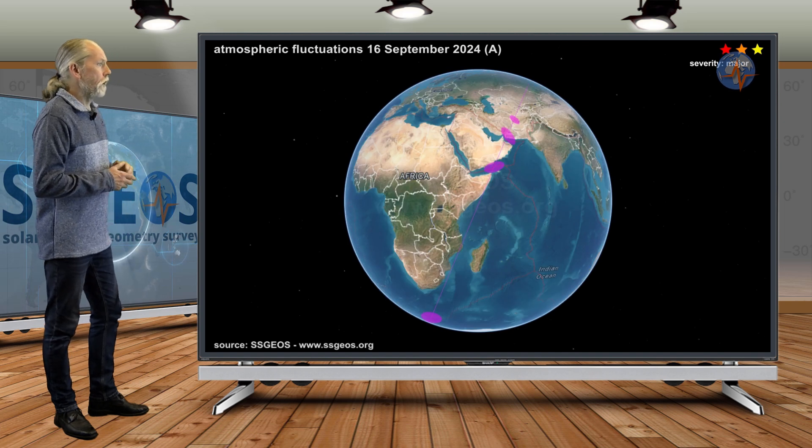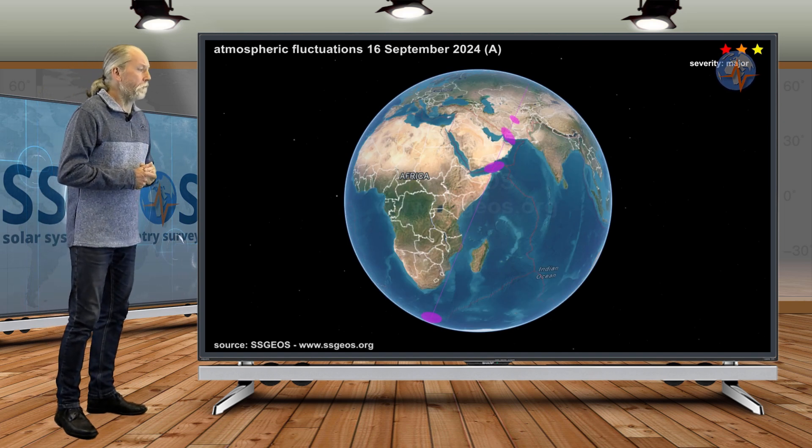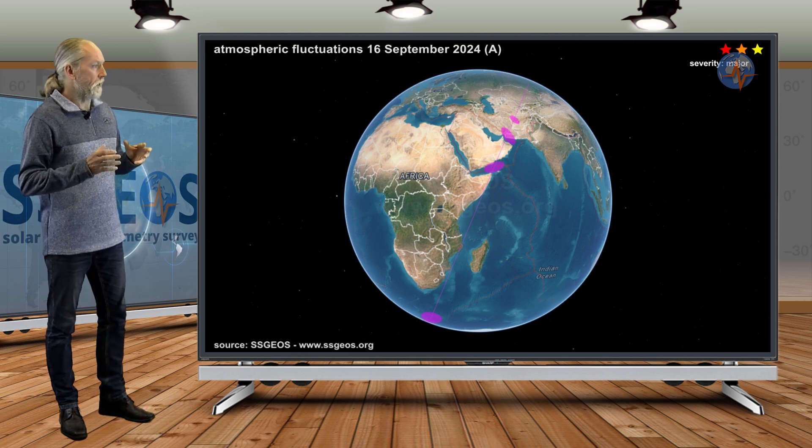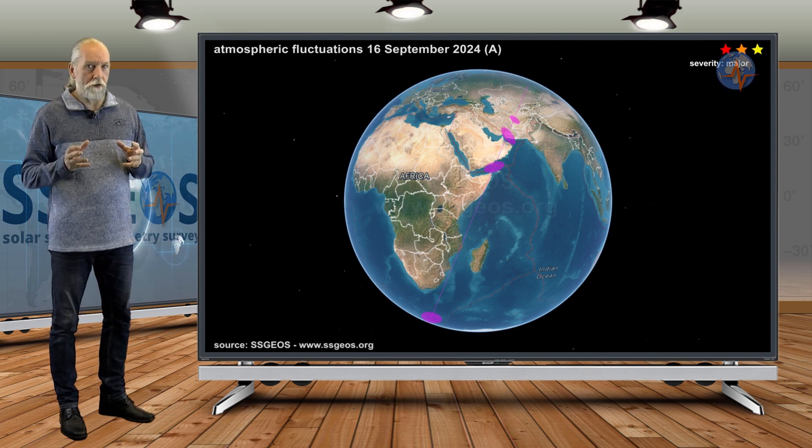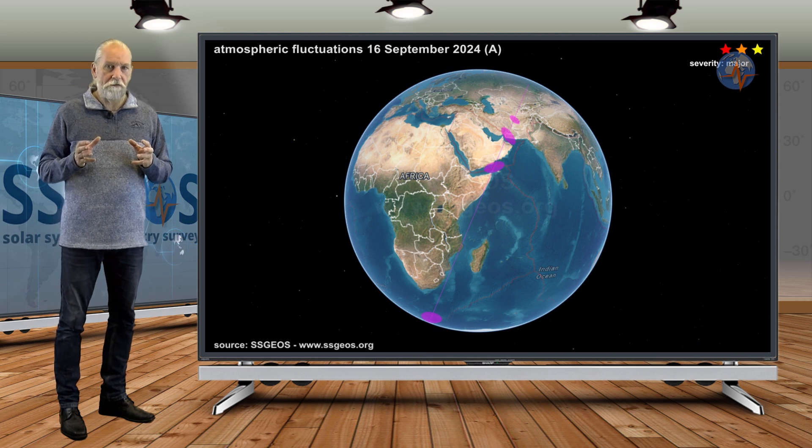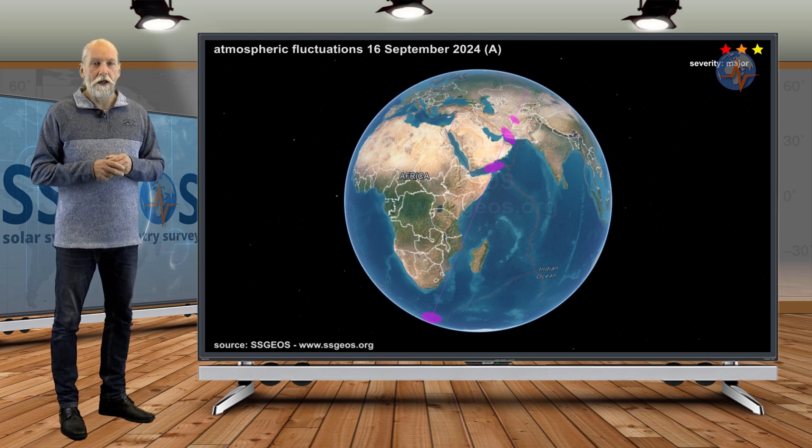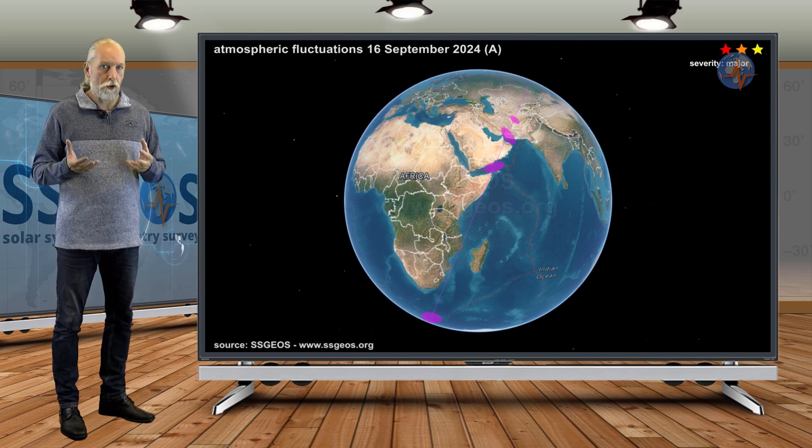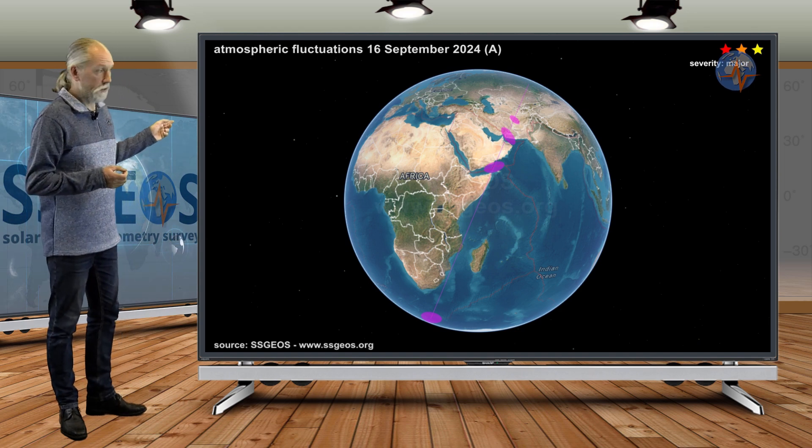And also we have the antipode, and that is marking here Iran. And Iran in particular I think should be on watch because it has been a while since stronger seismic activity occurred there. And it's marked here by the atmospheric fluctuations.